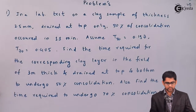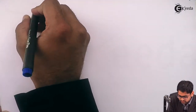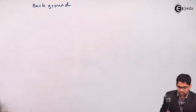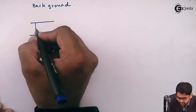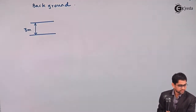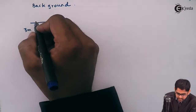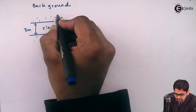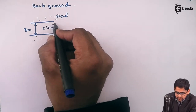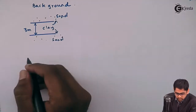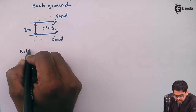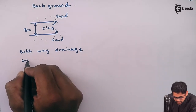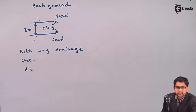We will proceed with this problem. To begin, we will look at the background concept. In the field, we have a clay layer of thickness 3 meters, with sand layers at the top and bottom. Drainage is occurring from both sides, so it is a both-way drainage case. Since it is a both-way drainage case, the drainage distance D equals H divided by 2.